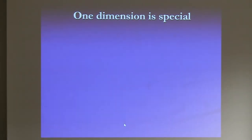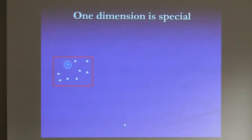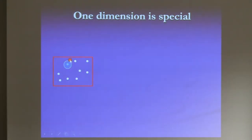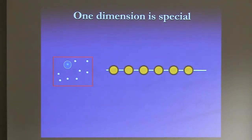Why do I want to talk about transport in one dimension? It's because one dimension is very special in many ways. The first thing is that, contrary to 2D and above, where particles — even if they are strongly interacting — retain some degree of individuality, in one dimension individual excitations do not exist, and everything is transformed into collective motion.